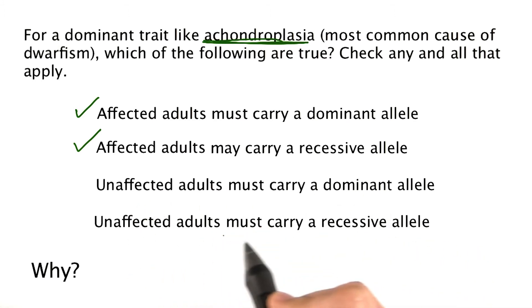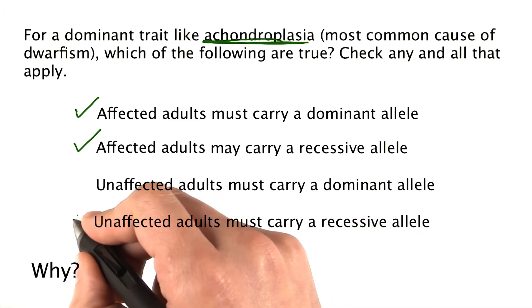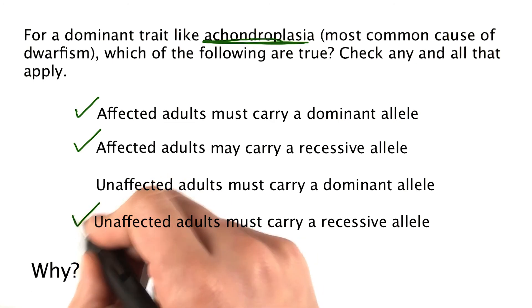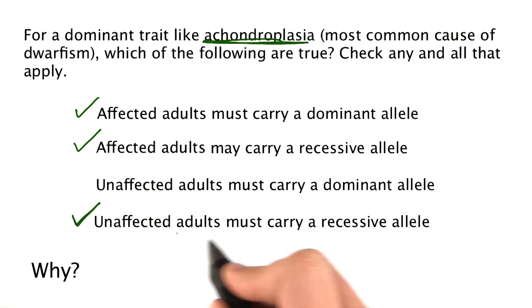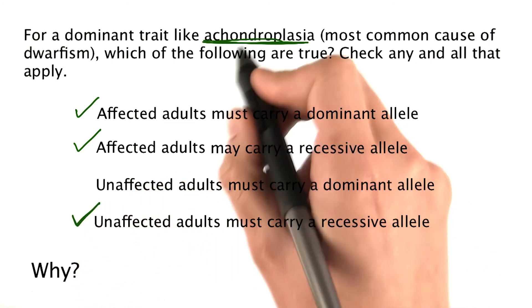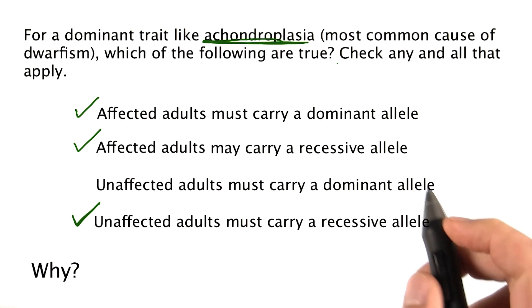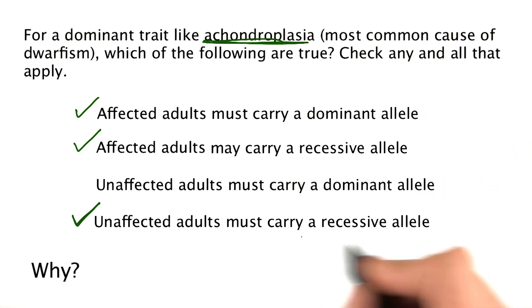And unaffected adults must carry a recessive allele. Well, that must be true, right? Because if you're unaffected, it means you don't have one of the dominant alleles that causes achondroplasia. So the first, second, and fourth options are true.